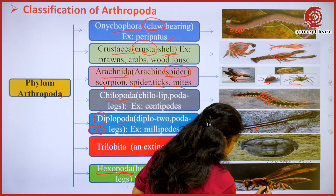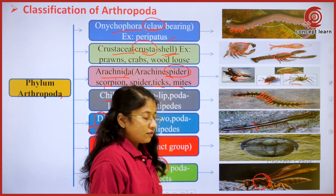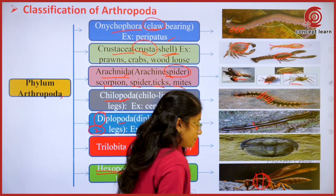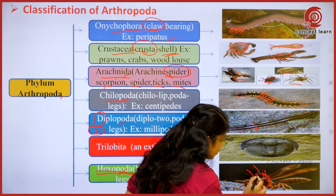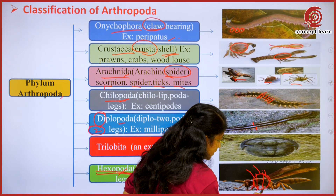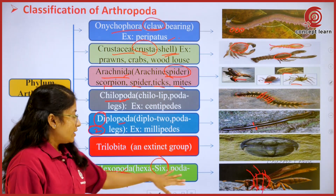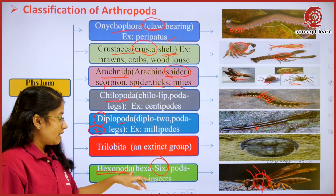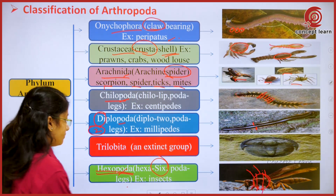Our major class is Hexapoda. 'Hexa' represents six. If you see the thoracic segment of the insect, it is divided into three segments, and each segment has a pair of legs — totally one, two, three, four, five, and six. So six legs, and due to the presence of six legs comes the name Hexapoda, in which insects are included.